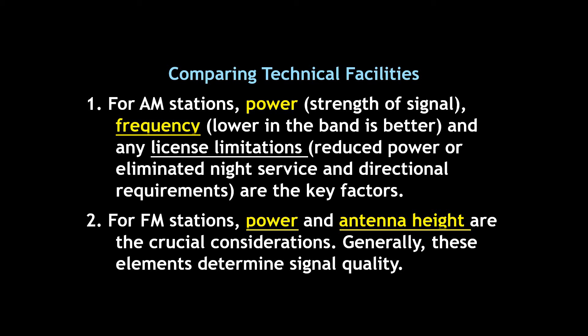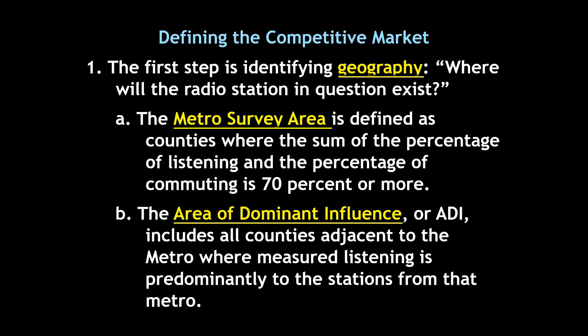For FM, power and antenna height are the crucial considerations, and these are going to determine signal quality. Antenna height is important because FM signals travel by line of sight. So the higher your broadcast tower is, the further your broadcast signal potentially could travel. Stations that have their towers up on the top of mountains tend to be able to reach pretty far distances — 100 miles or more in certain cases. But if you have a high-powered station but a low antenna, you're not going to reach as far as a station that maybe is lower power but has a higher antenna.